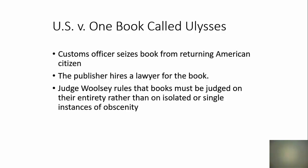Then things started to change with the case of United States v. One Book Called Ulysses. The book Ulysses, written by James Joyce, is considered a classic — very earthy, very powerful — but it contained scenes in which people were doing the rumba. It was considered obscene by American authorities and was on a list of books not permitted to be brought into the United States. An actress who had been touring Europe bought a copy, read it on the ship coming to the United States, and when she landed in New York, a customs agent saw the book, checked it against the list, and seized it.